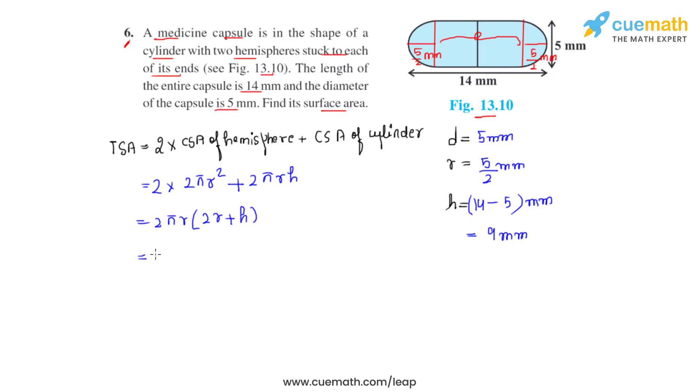Now let's substitute the values: 2 times 22 by 7 times 5 by 2, 2 times 2 times 5 by 2 which is added to 9. Now we can cancel out 2 and 2. Inside the brackets again we can cancel out 2 and 2.